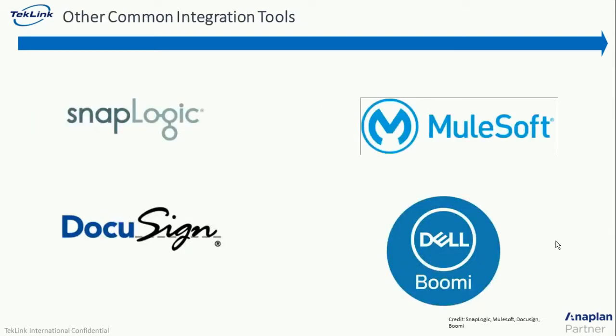Some of the other common integration tools that Anaplan has are SnapLogic, which has a specific Anaplan SnapPack with an interface for businesses to easily automate actions. Then we have MuleSoft and Dell Boomi, which are similar to Anaplan Connect but have a different API so that they connect to different data sources instead of just using a directory. And then we have DocuSign, which has integrated with Anaplan so that you can easily email DocuSign documents with Anaplan data.